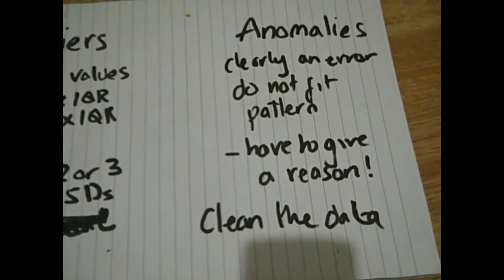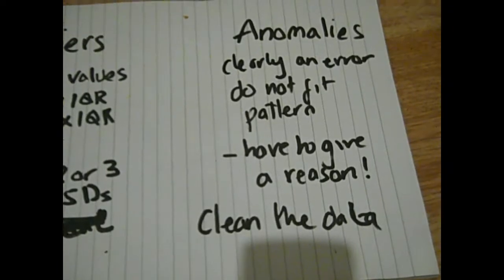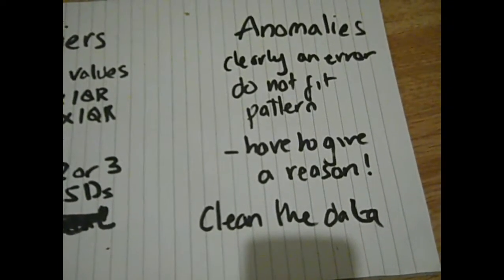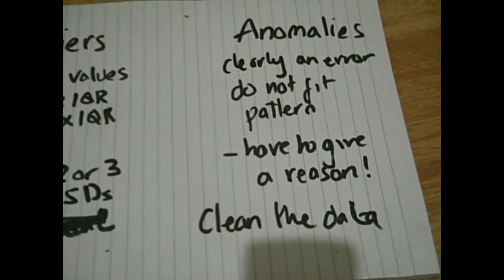Of course, sometimes you can get discounts for bulk, but the idea is the more you buy, the more you spend. An anomalous piece of data will be something that bucks that trend. So saying like, ten cars cost a million pounds and twelve cars cost less than a million pounds - it's clearly an error, it doesn't fit the pattern.